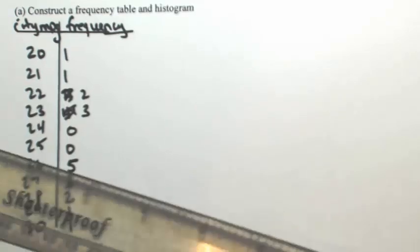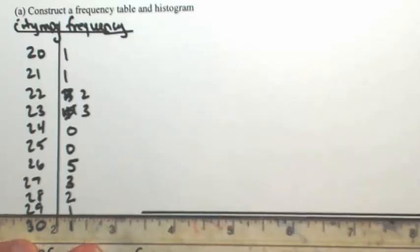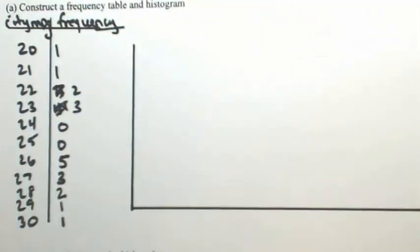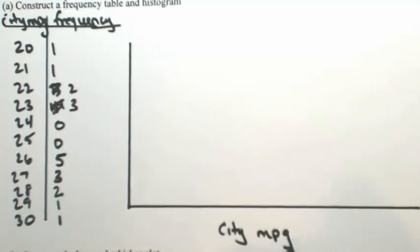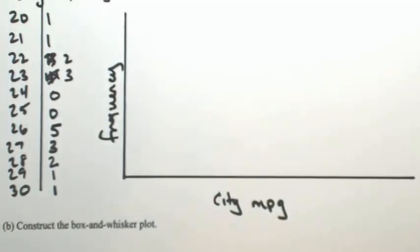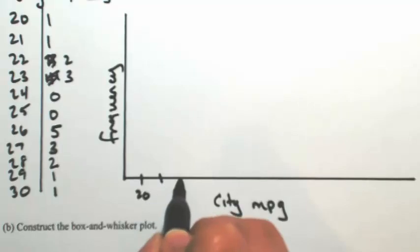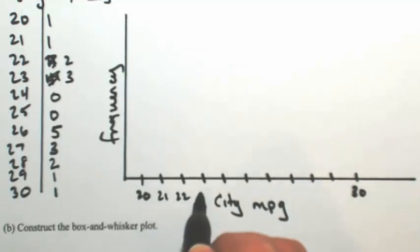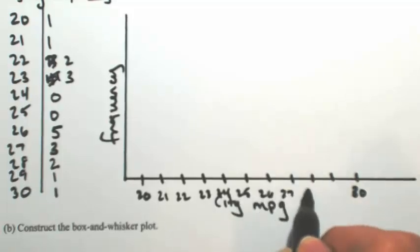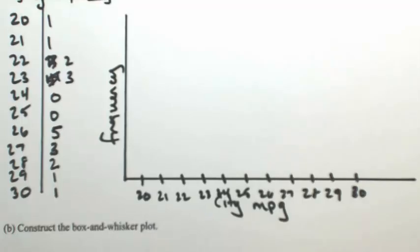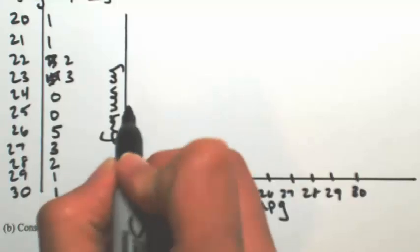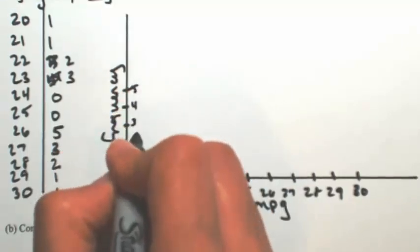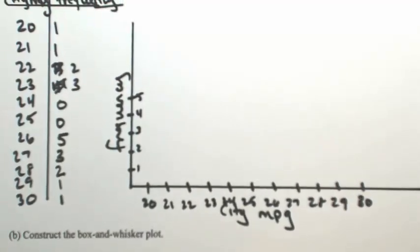Now we're going to set up the histogram, which means we're going to have a horizontal axis that's going to represent the city miles per gallon and a vertical axis that's going to represent the frequency. For city miles per gallon I started at 20, so I'm going to start at 20 and end it at 30. For frequency, the highest one is 5, so I'm going to go to 5.